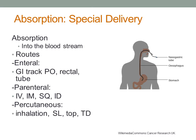Medications are given in three ways. The enteral route is given in the GI tract — this is PO, rectal, and an NG or G tube. Parenteral administration is usually interpreted as injecting directly into the body, bypassing the skin and mucous membranes. The common parenteral routes are intramuscular, subcutaneous, and intravenous. Percutaneous absorption happens through unbroken skin — percutaneous routes are inhalation, sublingual, topical, and transdermal.